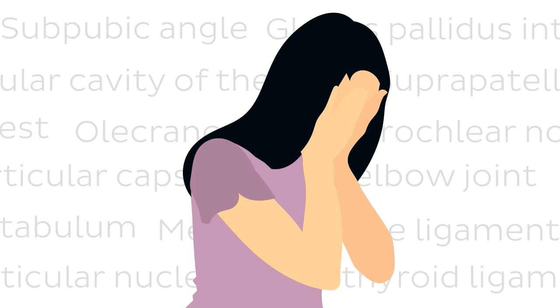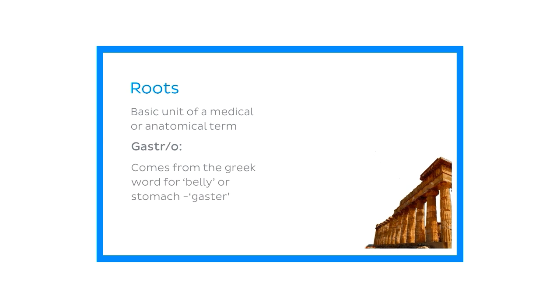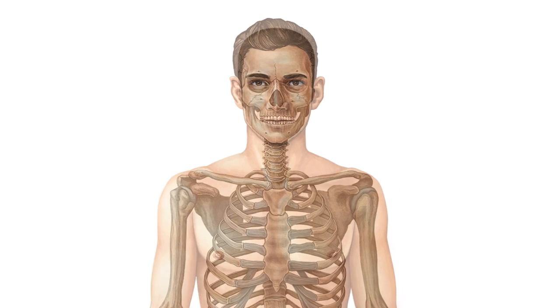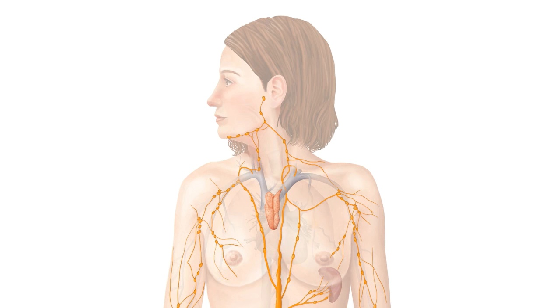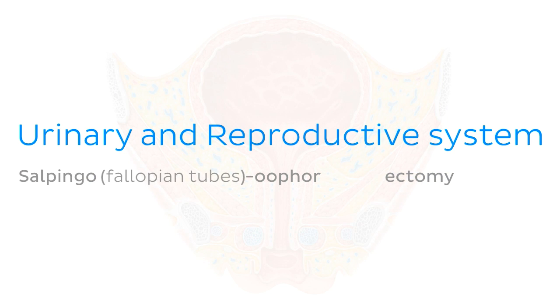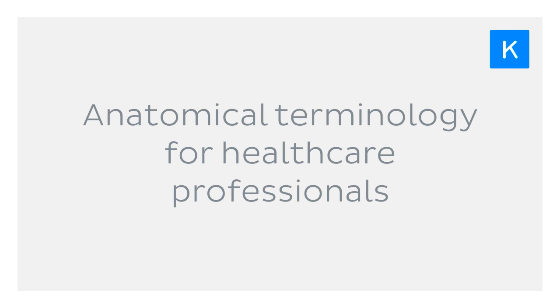So often we find ourselves caught in a standstill dealing with overly complicated, tongue-twisting medical terminology. However, over the course of this information-packed series on anatomical terminology, we're going to be helping you break the fear of terminological paralysis by mastering the language of each and every system of the human body. So welcome to the second episode of the KenHub series, Anatomical Terminology for Healthcare Professionals.